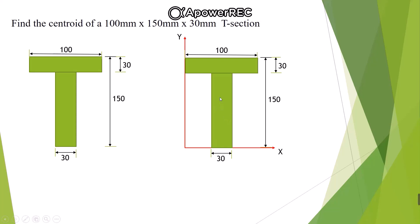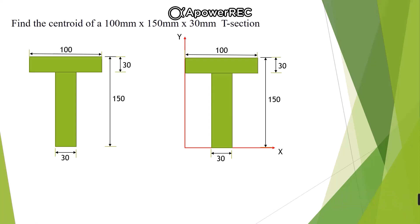When we choose the reference axes like this, the entire section lies in the first quadrant, so the coordinates of the centroid will always be positive. The second step is to divide this composite section into simple figures. This T-section consists of two rectangular sections, so we divide it into two rectangles — this is the first rectangle and this one is the second rectangle.